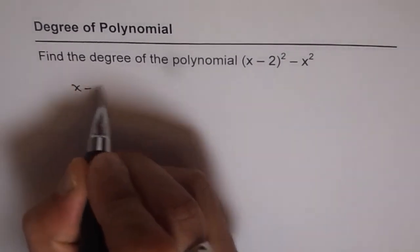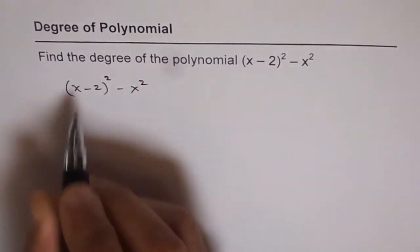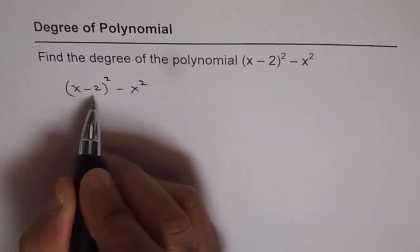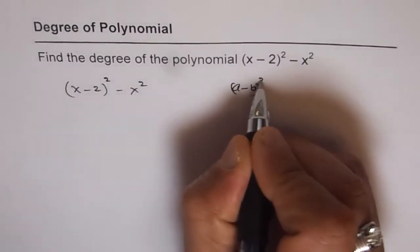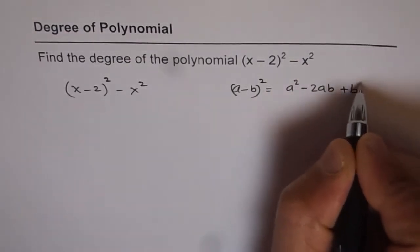We have the expression as (x - 2)² - x². So if I expand this, you can expand using the formula which is (a - b)². You remember (a - b)² is a² - 2ab + b².